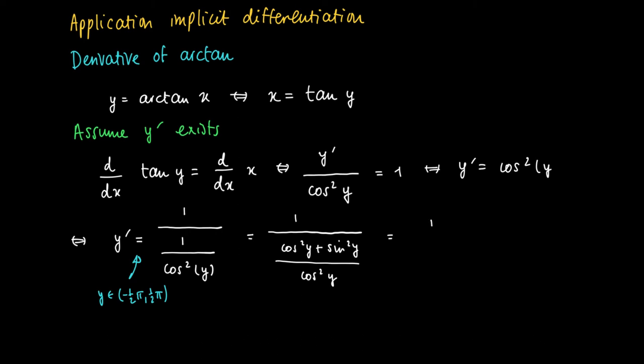1 over the cosine squared divided by cosine squared is 1, and the sine squared divided by the cosine squared equals the tangent squared of y. We know actually what y is: y equals the arctangent of x. So we get 1 plus x squared, since the tangent and the arctangent are inverse functions.